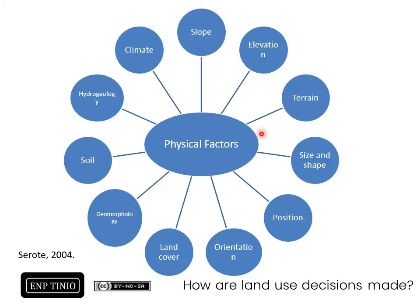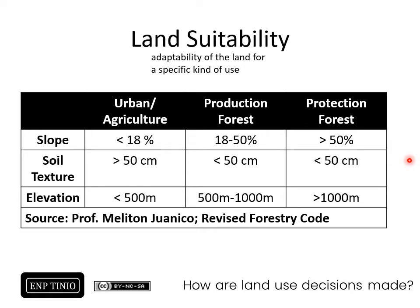Primarily, land use planners consider slope, elevation, and soil characteristics in the land they are planning. A concept important to note in land use decision making is land suitability. The Revised Forestry Code, PD 507, provides criteria for urban, agriculture, and agricultural uses. Once elevation is above 1,000 meters, protection forest land uses are applied.